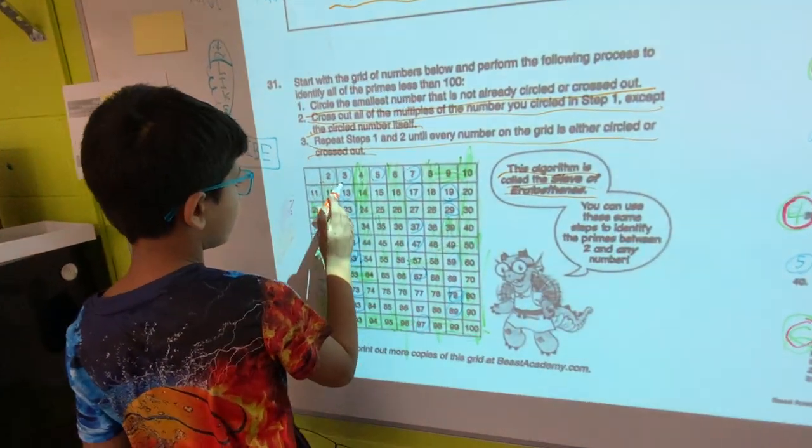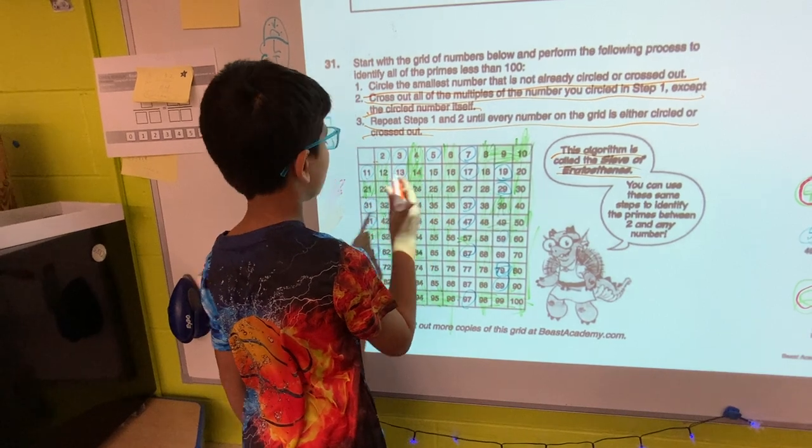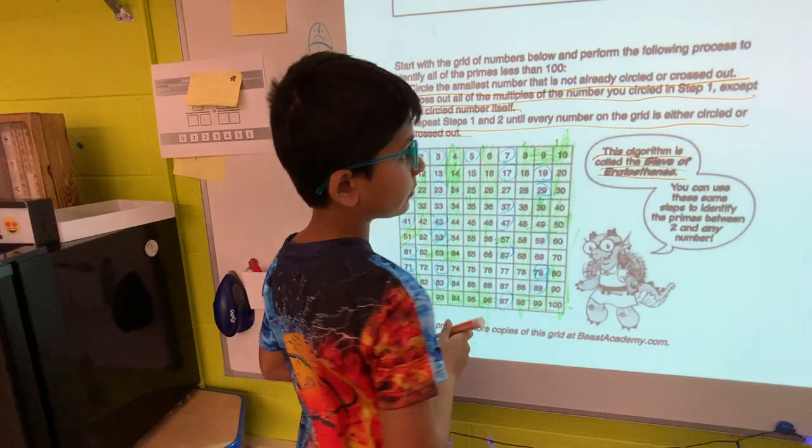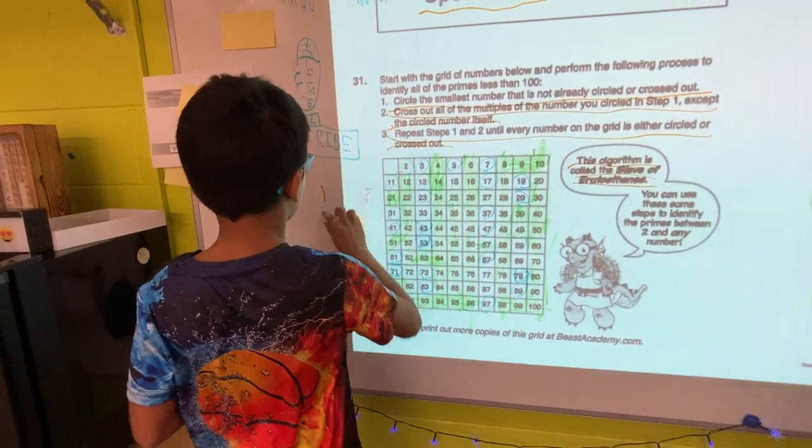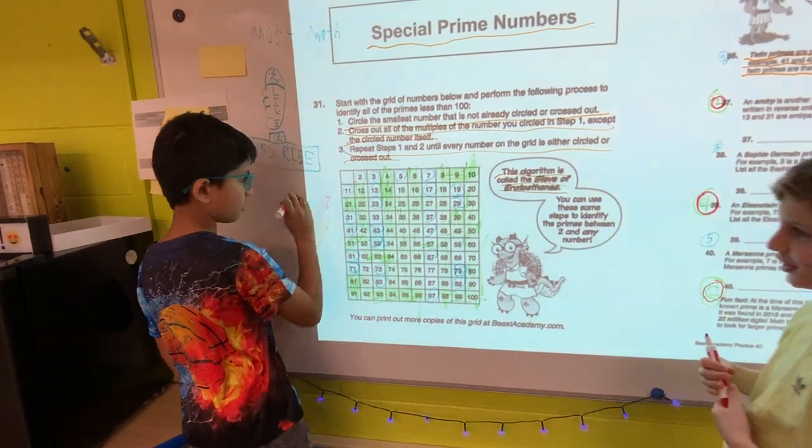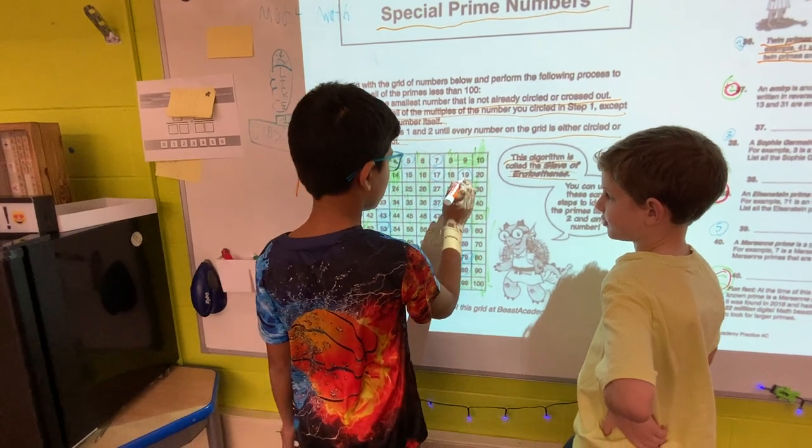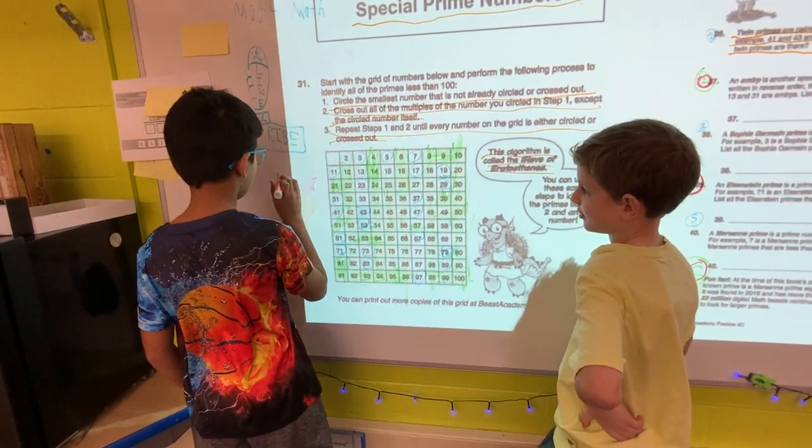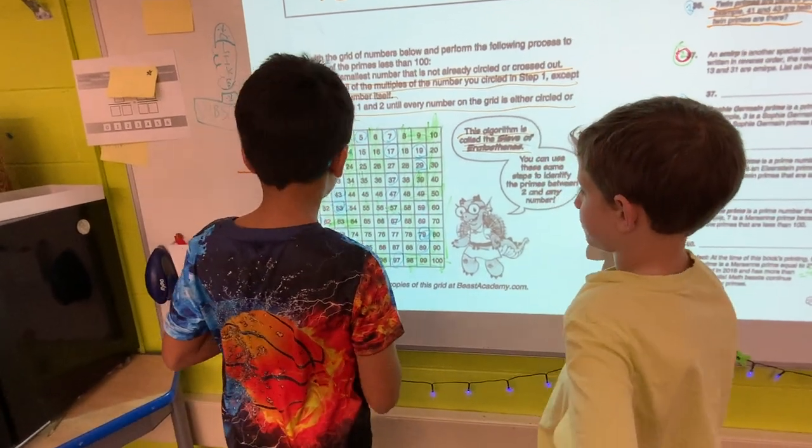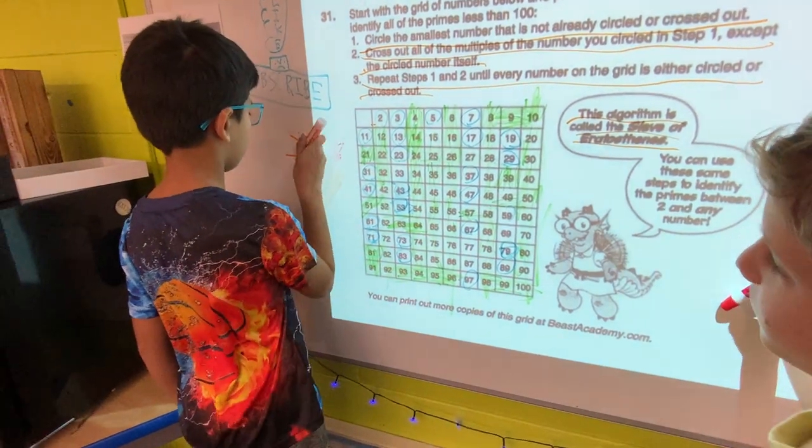Two and four aren't one, three and five are. It says two-digit. So then we do eleven and thirteen are one. That's one. Thirteen and fifteen aren't. Seventeen and nineteen are, so that's two. Twenty-nine and thirty-one, yep, so there's three.